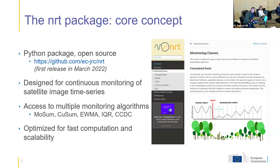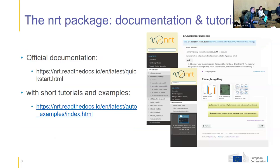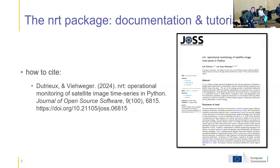So the GRC, two or three years ago with Loïc Dutrieux, decided to develop a new package called NRT, for near real time. It's based on Python and it aims to be more generic. It proposes different monitoring algorithms for detecting anomalies in a satellite image time series, and it is optimized for fast computation and scalability. There is official documentation and it's an official package, with short tutorials and examples. If you want to cite or get more information about this tool, there's a paper published in the Journal of Open Source Software.